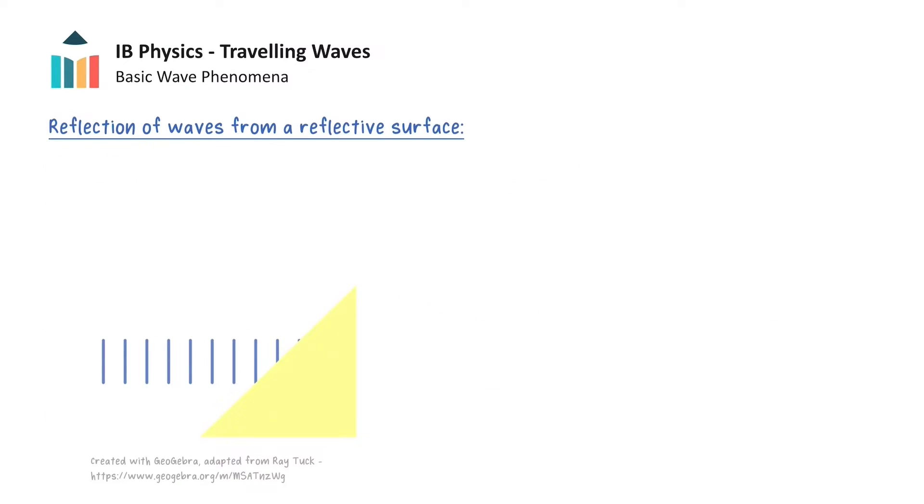We can now use wavefront and ray diagrams to illustrate how waves behave when they are reflected. Waves that travel to a reflecting surface can change direction at the surface. Take this wave here, which is represented by these wavefronts. These are known as the incident wavefronts. When the wavefronts hit this flat reflecting surface, which could be a mirror for example, they will be reflected as follows, and these are known as the reflected wavefronts.